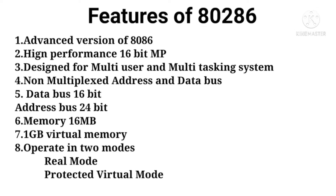It has high performance and can be used for multitasking and multi-user applications. Here also the data bus and address bus are present, but the difference is that the address bus and data bus are not multiplexed — that means it has a separate path for address and also a separate path for data. The size of the data bus is 16-bit, meaning it can perform 16-bit operations.